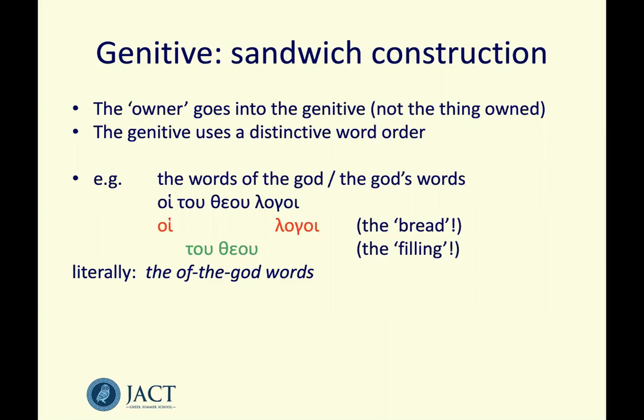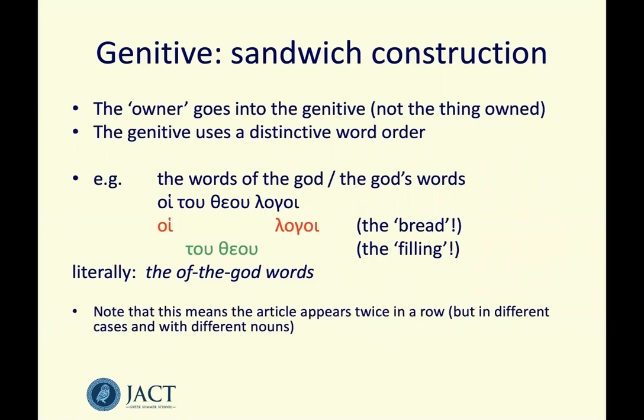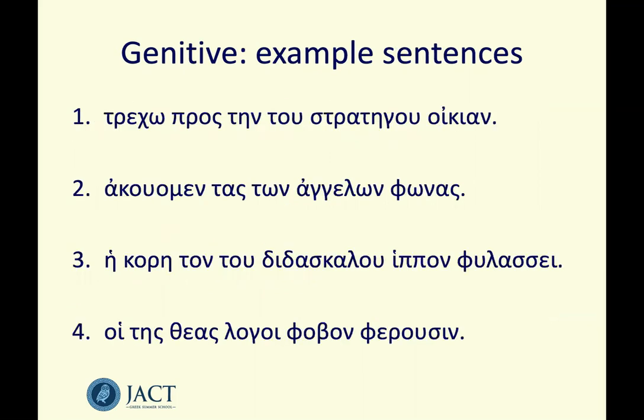So the owner in the genitive goes into the middle of this sandwich construction. This means you see two lots of the article appearing in a row, but they'll be different cases — usually — and they're going with different nouns. So 'hoi' and then 'tou' — nominative and then genitive. 'Hoi' is going with 'logoi' and 'tou' is going with 'theou'. With that quirk in mind, have a go at looking at these four sentences, all using the genitive. Pause the video, see if you can translate them, and then we'll go through them.